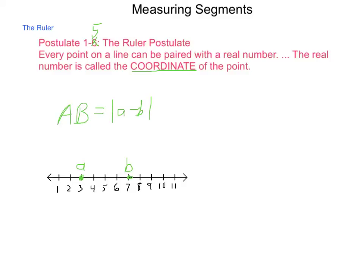So, in this case, we have A is at point 3, or is at the coordinate 3, and B is at coordinate 7. So AB is going to be the absolute value of 3 minus 7, which equals the absolute value of negative 4. Now reminder, absolute value means distance from 0, so negative 4 is 4 units away, the length of line segment AB is 4.